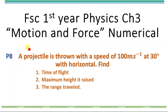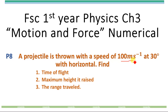This is numerical number 8 from the 3rd chapter of 1st year physics. A projectile is thrown with a speed of 100 meters per second at 30 degrees with the horizontal. Find the time of flight, maximum height it raised, and the range travelled.